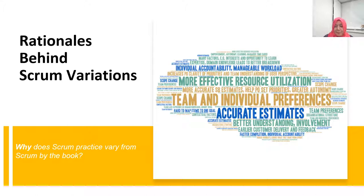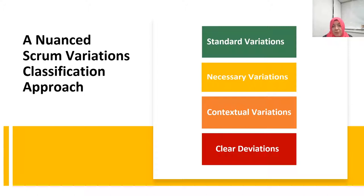To make sense of these variations, we present a nuanced Scrum variation classification approach, which explains variations in practice as standard variations, necessary variations, contextual variations, and clear deviations.